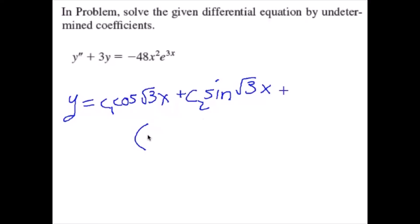plus negative 4x squared plus 4x minus 4 thirds times e to the 3x.